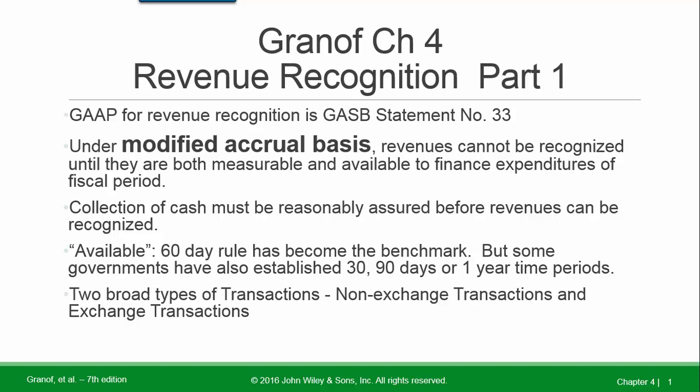What does 'available' mean? The 60-day rule has become the benchmark, but some governments have also established 30, 90 days, or a one-year time period. The 60-day rule is what we cover in the chapter and that is the benchmark.